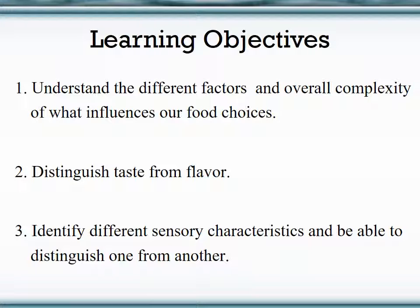So why do we choose to eat the foods that we eat? Number 2: we're going to be talking about a lot of sensory characteristics — you have to be able to distinguish taste from flavor. Number 3: identify different sensory characteristics that are used when testing food, and be able to distinguish one from another. Know what each means and how they're different from other sensory characteristics.